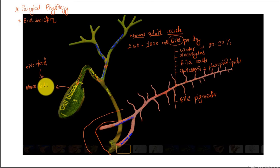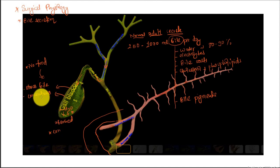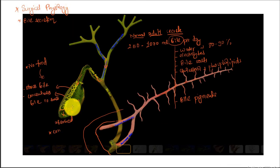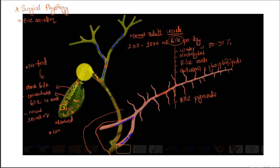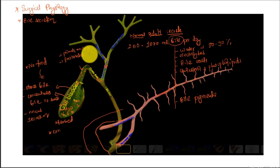In the gallbladder, the key functions include acting as a storage of bile, absorbing water, concentrating the bile 10 times, absorbing sodium and chloride. Mucus secretion is also one of the functions of the gallbladder, which results in production of mucosa and facilitates passage of bile through the cystic duct.